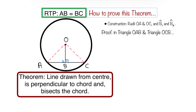After constructing the radii OA and OC, I'm also going to construct B1 and B2. Do you see B1 here? And also B2? Awesome. So now that I have that, I'm going to work in triangle OAB.